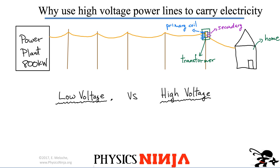I want to look at a problem as to why we use high voltage power lines to carry electricity versus using low voltage across the power lines. Let's consider this situation: I've got a power plant which puts out 800 kilowatts. That electricity is carried along copper wires all the way to your home. In the high voltage case, there's probably a transformer or a series of transformers.